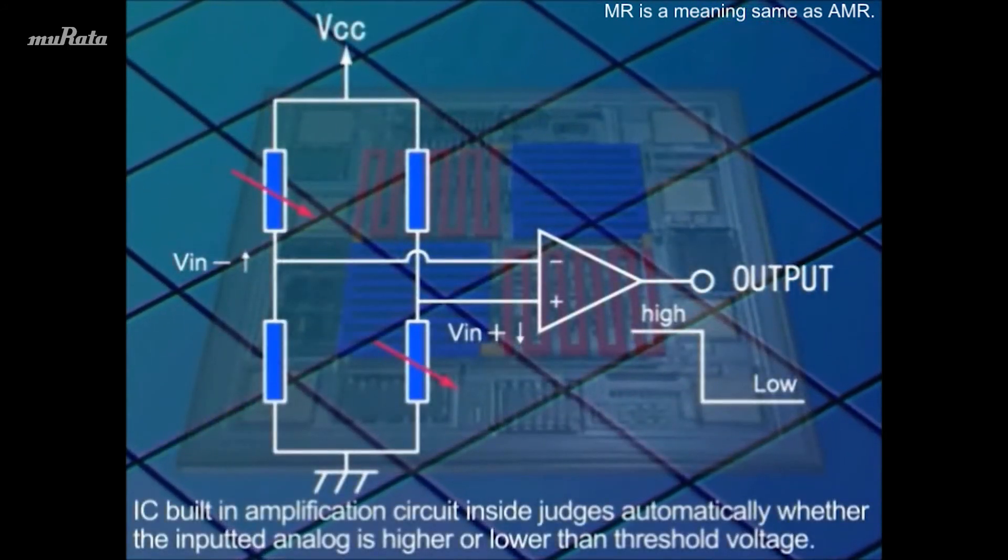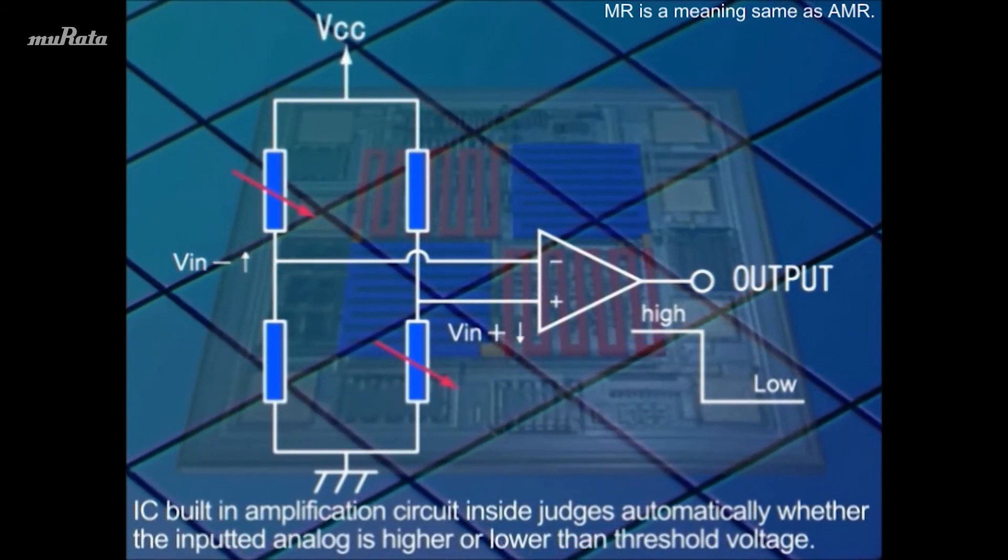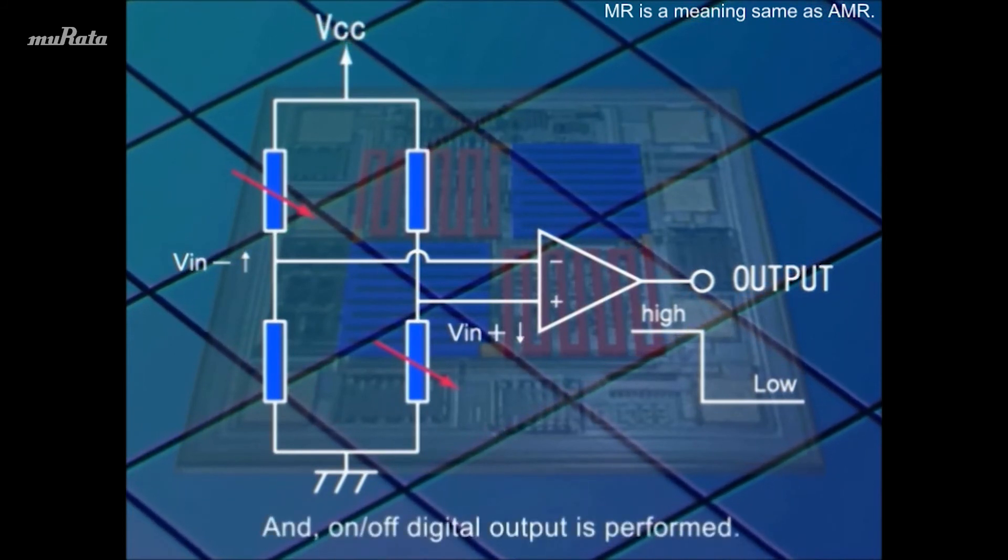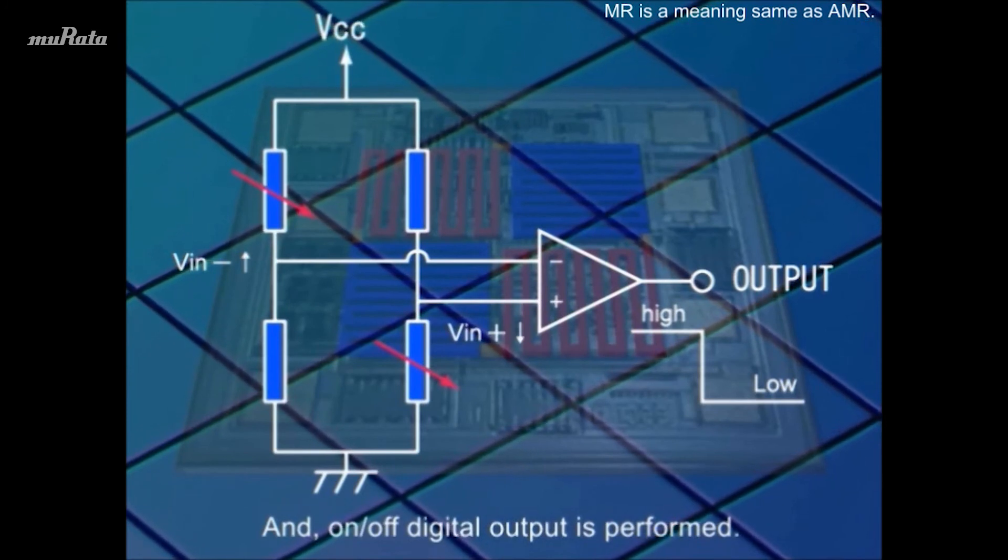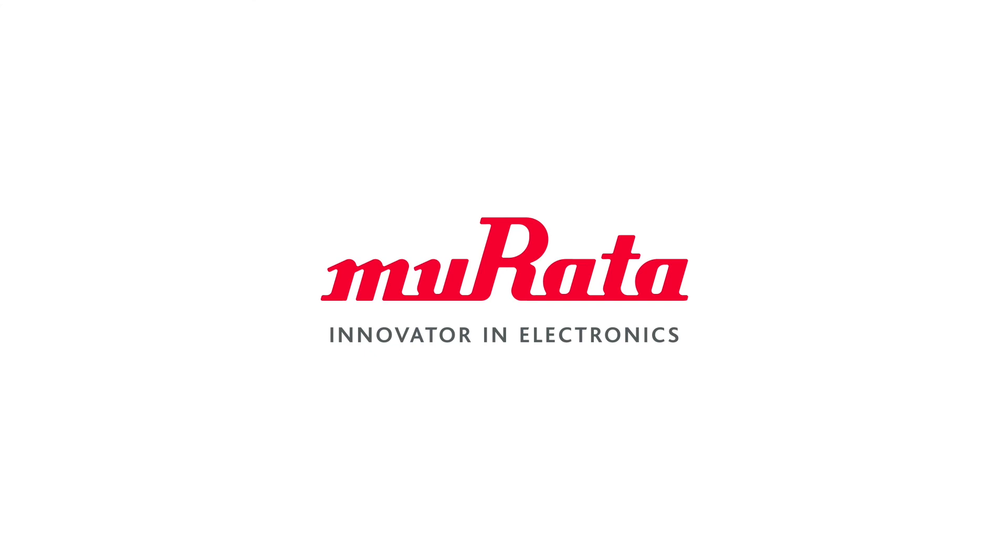The IC's built-in amplification circuit automatically judges whether the inputted analog voltage is higher or lower than the threshold voltage. An on-off digital output is then performed.